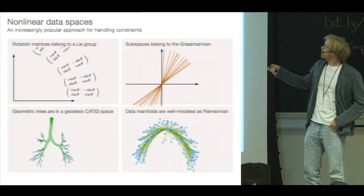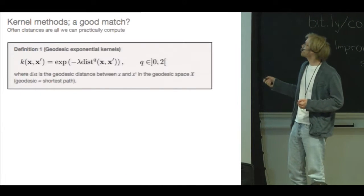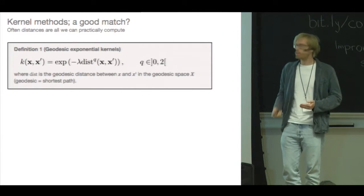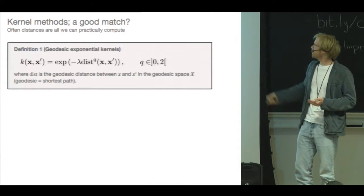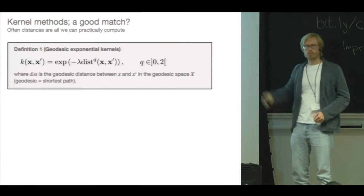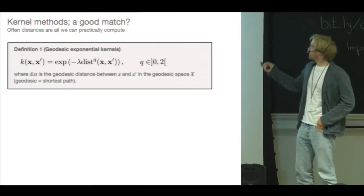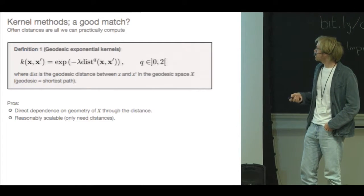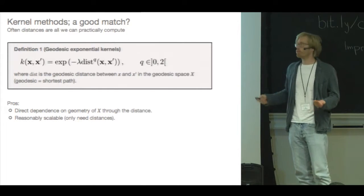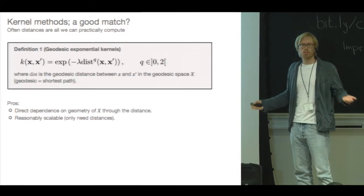Now, in these spaces, one reliable quantity that we can often compute is simply the distance between a pair of points. So assume you want to build a classifier, then what's more obvious than to just compute your geodesic distance, raise it to some exponent q, scale it, take the exponential, and then plug the result into your favorite support vector machine, or whatever. This seems like a very natural choice, and it's nice in the sense that you capture the geometry of the underlying space through the distance measure, and it's also fairly practical, because you really just need to be able to compute distances.